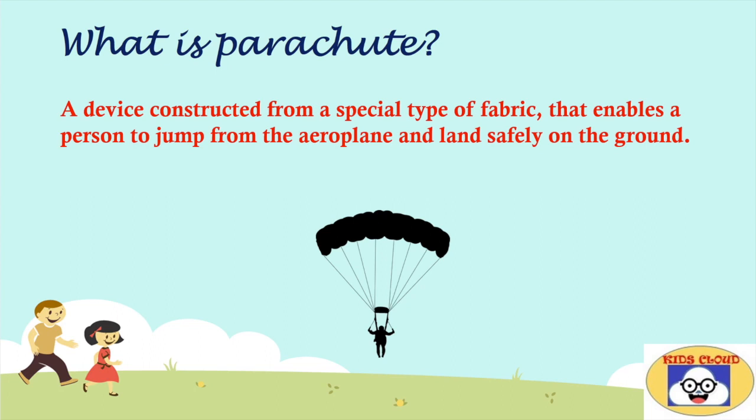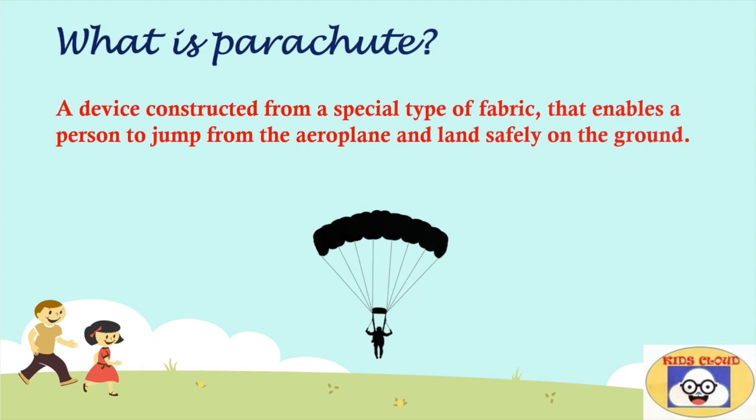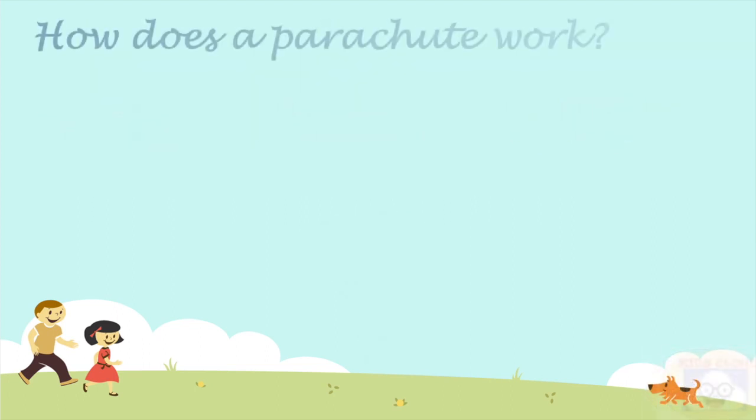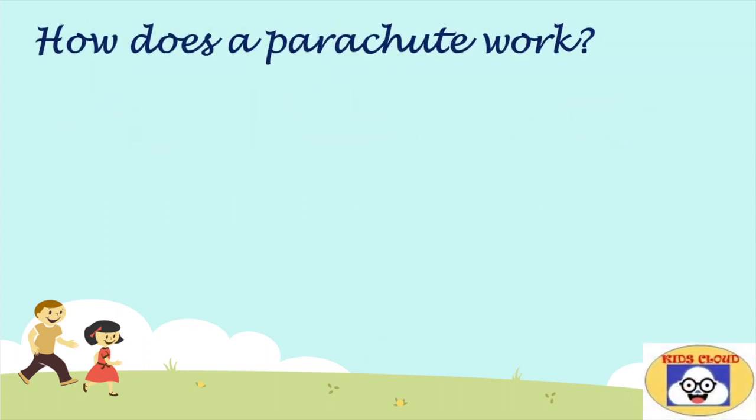Now let's see how does a parachute work. When an object or a person falls from the sky, there are two forces acting on that object or person. First is gravity, and second one is the air resistance.